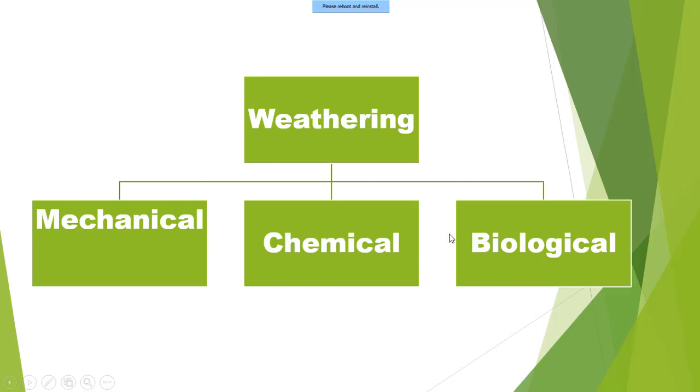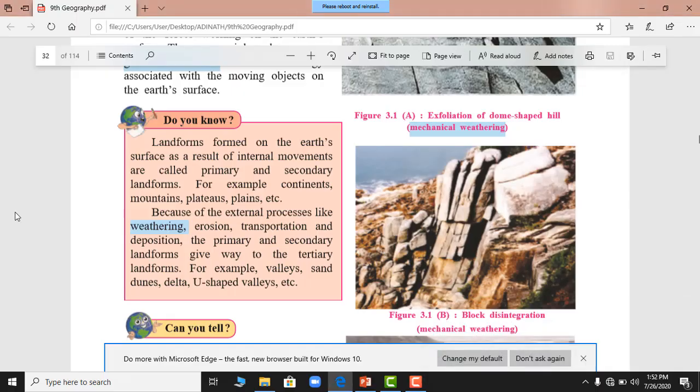So weathering means the removing or breaking of the rocks particles. There are the three types of weathering: Mechanical Weathering, Chemical Weathering and Biological Weathering. These are the agents. Mechanical Weathering. Primary and secondary landforms, like continent and mountain because of the internal moment. Continents, mountains, plateau, plains. These are the internal moments. And these because of the external processes like weathering, erosion.